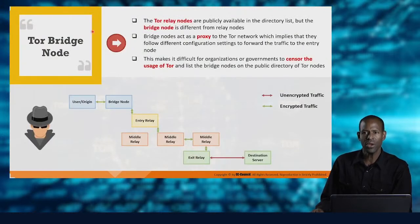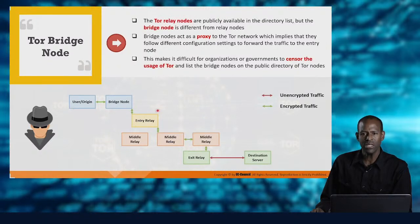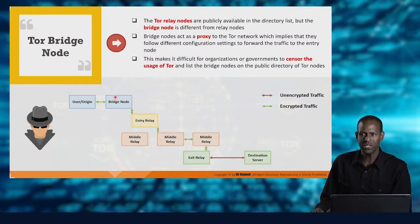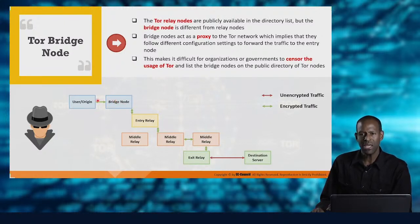In terms of Tor relay nodes, there is a publicly available directory list. Bridge nodes are a little different — they are a proxy to the Tor network with different configuration settings, making it even more difficult for governments or organizations to censor Tor usage and find those bridge nodes. This makes your traffic and access to the Tor network even more abstracted.